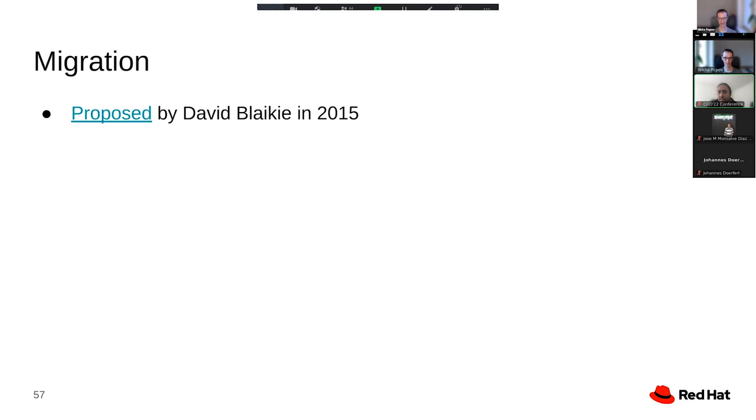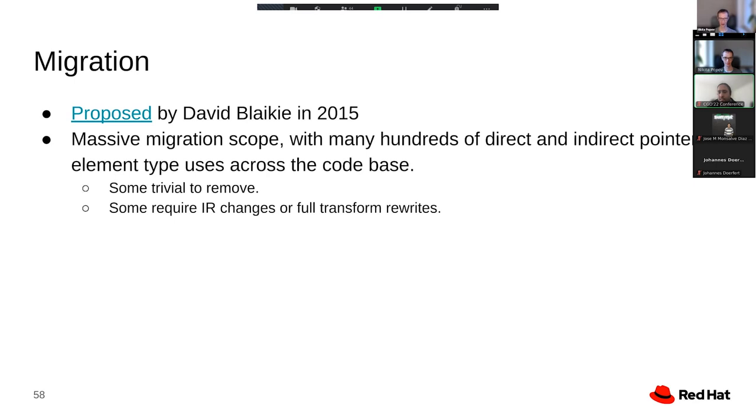The answer is pretty simple. It's just the massive scope. We used to have many hundreds, possibly many thousands of uses of pointer element type in the LLVM code base. Most of them not direct, but indirect through things like IR builder APIs. And some of those are really easy to remove. You just take one call and replace it with another. And some of them require changes to the IR design or from-scratch rewrite of transformation passes. Today you need anywhere between one minute and multiple workdays to remove a single pointer element type access.